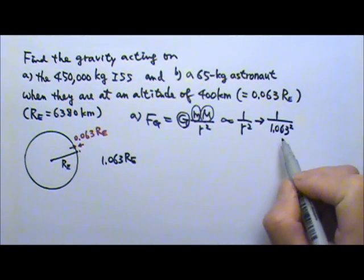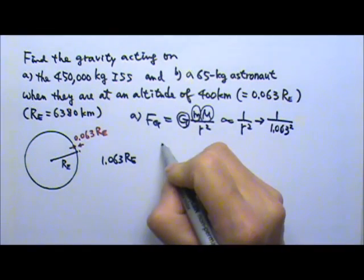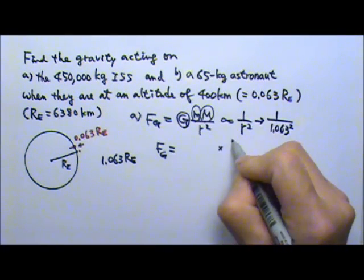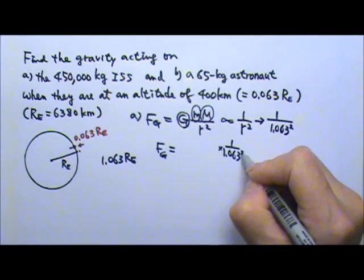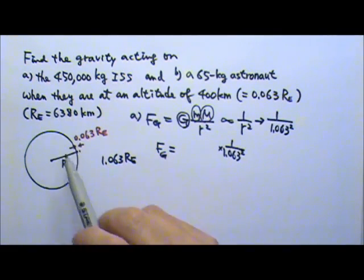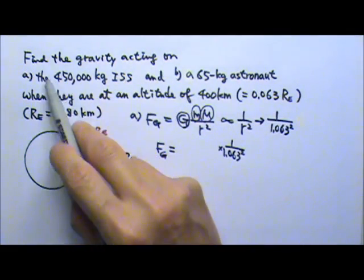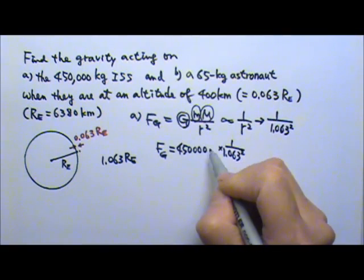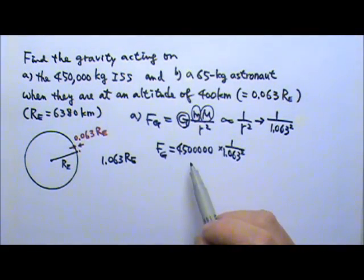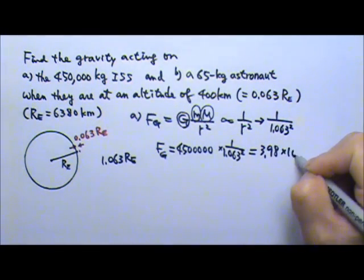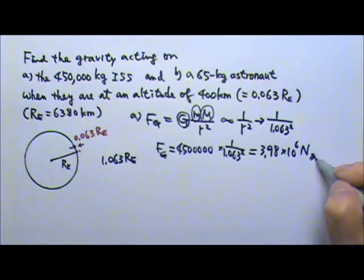But this factor is not the answer — it is only the factor by which things change. To find the new gravitational force, we multiply the old value by this factor. The old value is the weight of the space station at the surface. Using g = 10, the gravitational force on the surface is 4.5 × 10⁶ N. Multiplying by the factor gives approximately 3.98 × 10⁶ N.